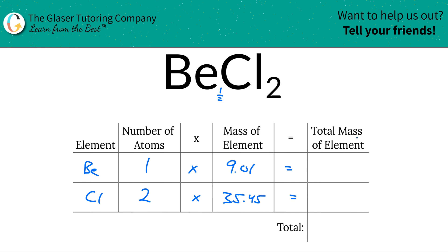And now to find the total mass of the individual element, we just simply multiply this row across. So 1 times 9.01 means that there is a total mass of beryllium of 9.01. And then 2 times 35.45 for chlorine means that there is a total of 70.90 units of mass for chlorine.